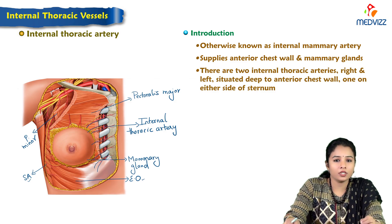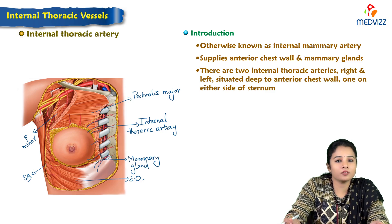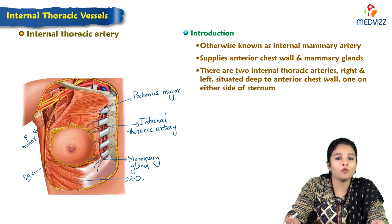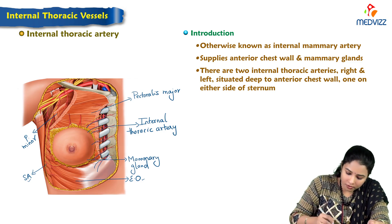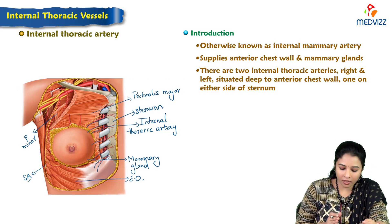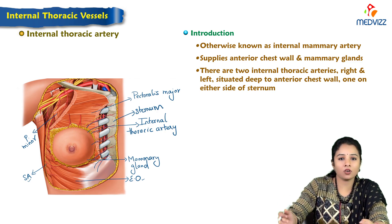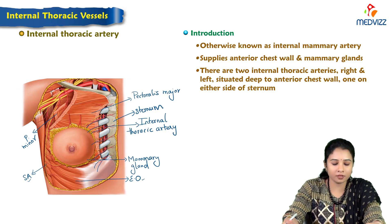There are two internal thoracic arteries — one on the right and one on the left — which are situated deep to the anterior chest wall, one on either side of the sternum. Here is the sternum, and the internal thoracic artery on one side; the other will be on the other side of the sternum.